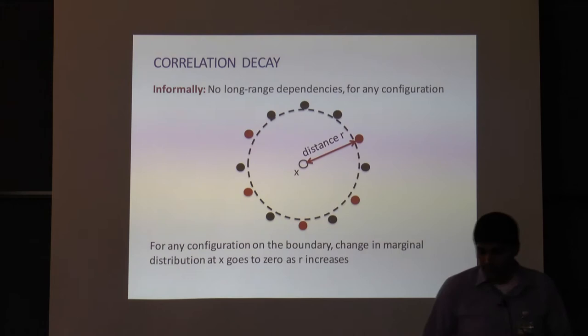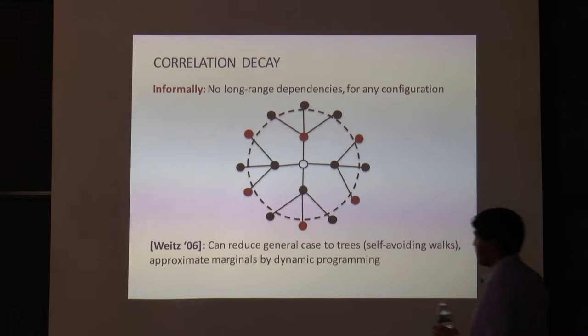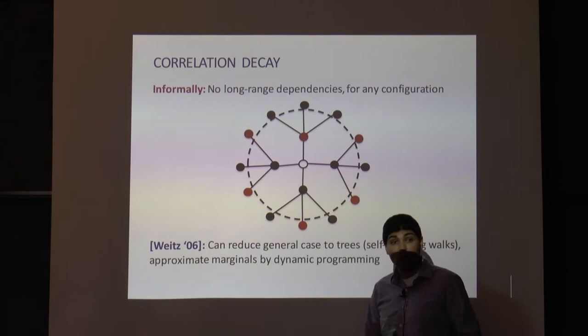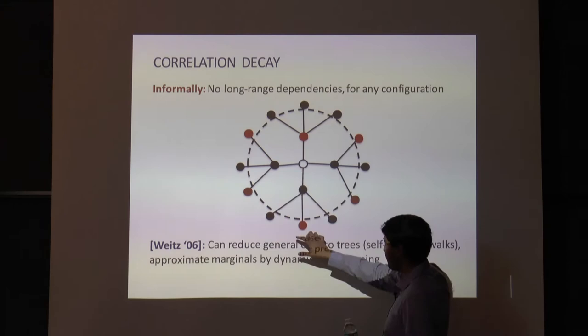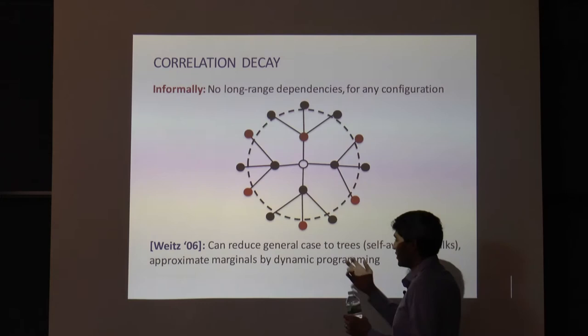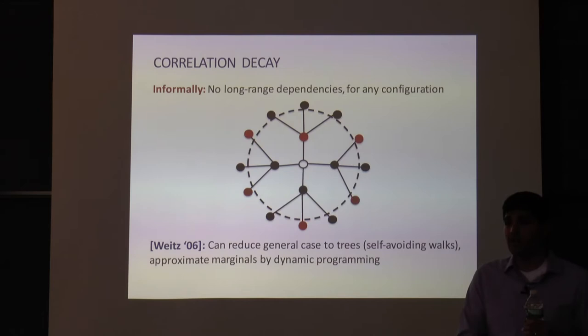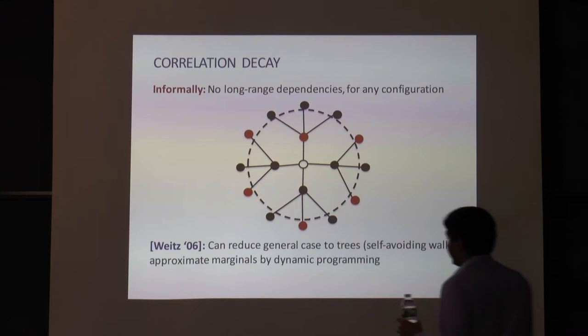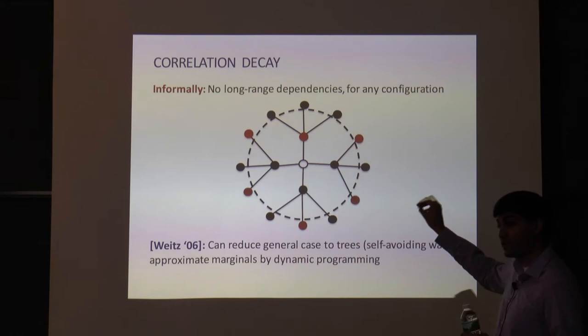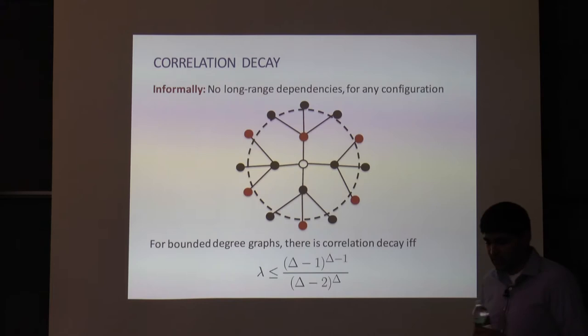Weitz's result was actually a beautiful way to understand correlation decay on general graphs through correlation decay on trees. On trees, the problem is much simpler because all subproblems are disjoint and you can build a recurrence — correlation decay is a contractive property of that recurrence. He showed that via self-avoiding walks, you can turn your general graph problem into a tree with an appropriate boundary configuration, and correlation decay on that tree is equivalent to correlation decay in the original graph.